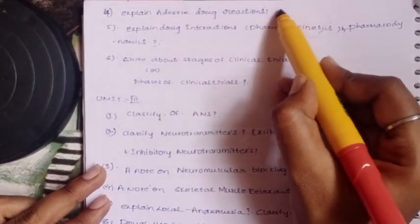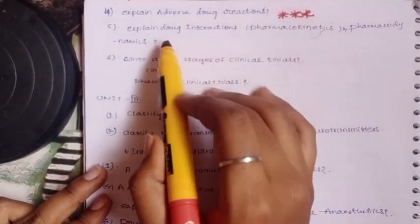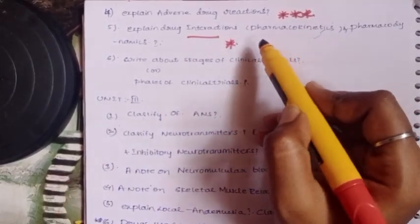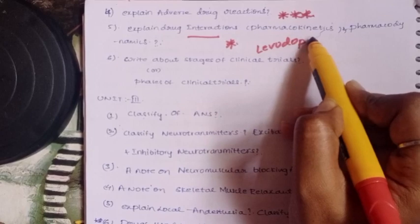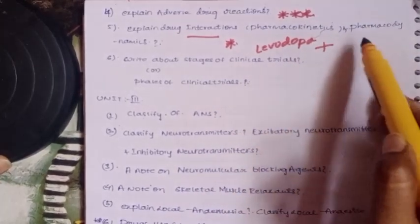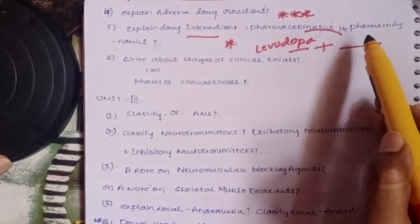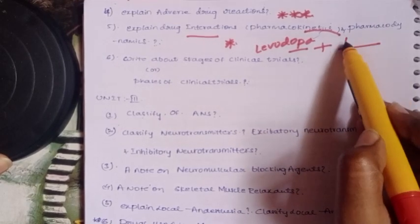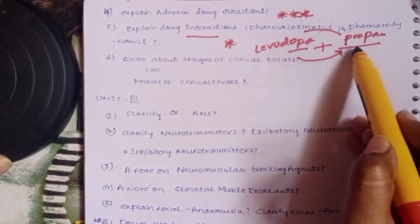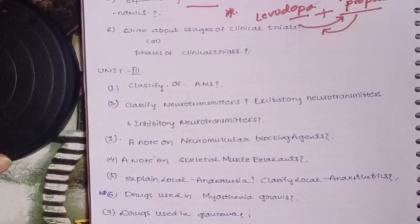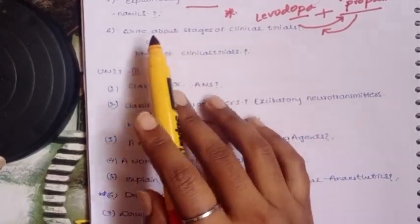Explain adverse drug reactions - very important, already covered in my channel videos. Explain drug interactions in pharmacokinetics - this is very important. For example, if you give a patient Levodopa and that patient also takes Propranolol, these drugs can interact. When you do this, one activity can affect the other activity. That's drug interaction.